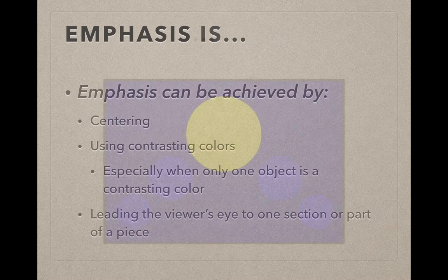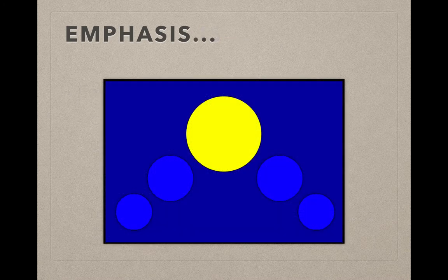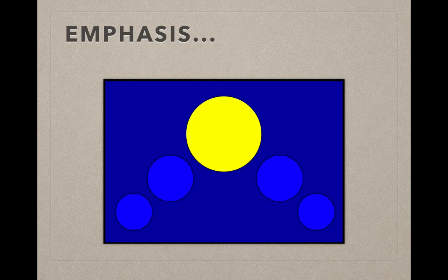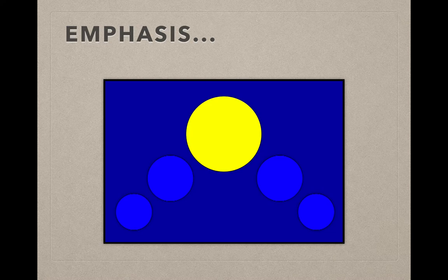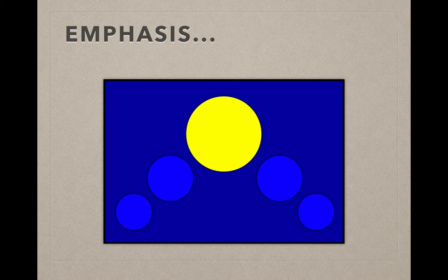In the example that you see here, I really don't give your brain much of a choice but to look at that yellow circle. Because the other circles and the background are all blue, it makes that yellow circle stick out as the only warm color.